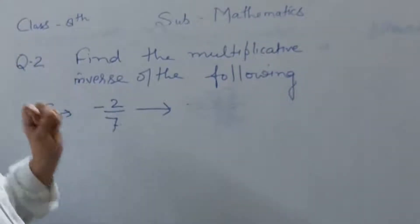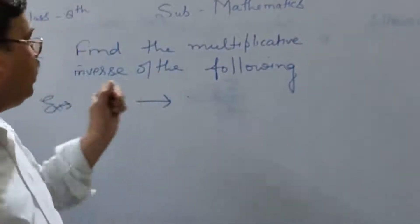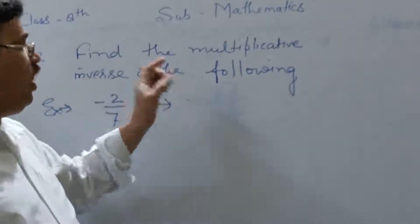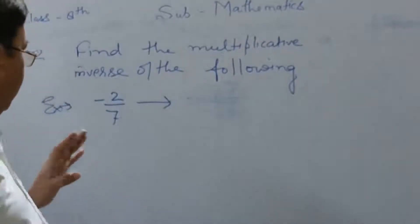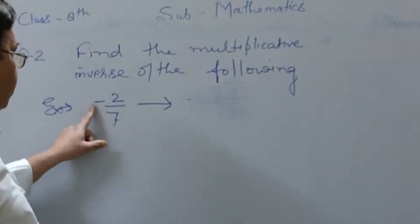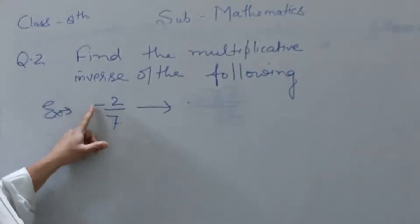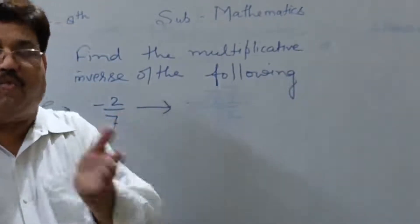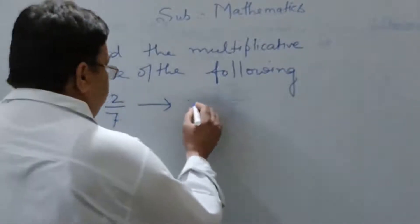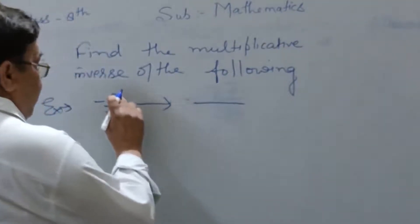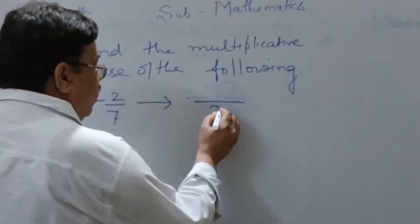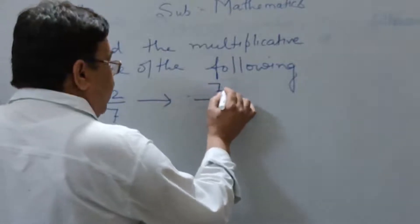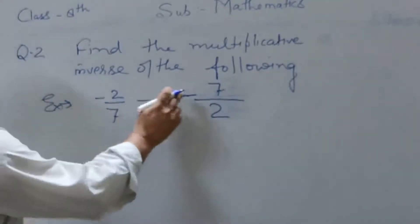Now, we will learn the second question. In this question, how to write the multiplicative inverse of any number. Example number first. In this example, 2 by 7. How to write this number in the multiplicative inverse form. First of all, the numerator becomes denominator and denominator becomes numerator. And put the sign before the number.